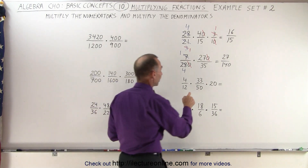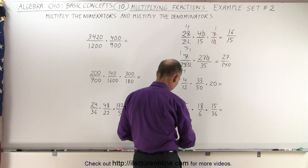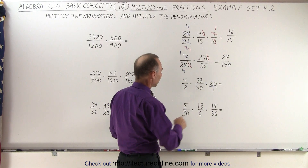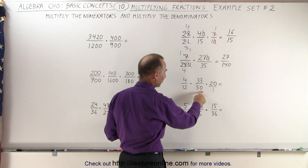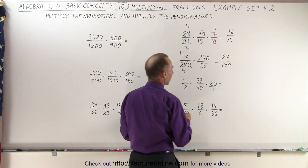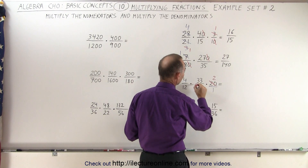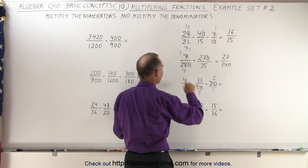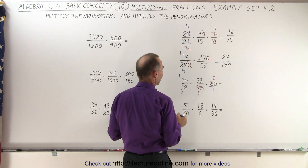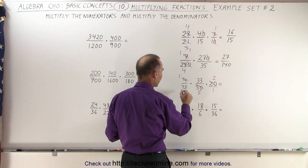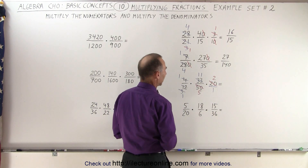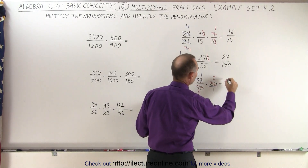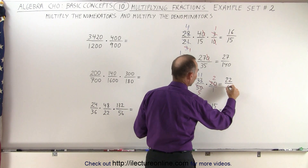Now on the third one, notice we multiply two fractions times 20. We can write 20 as 20 divided by 1, turning it into a fraction. Now we can look at all the numerators and denominators. We have a 20 and a 50 — divide both by 10, we get a 2 and a 5. We have a 4 and a 12 — both divisible by 4 — divide to get 1 and 3. We have a 33 and a 3 — both divisible by 3 — so 3 divided by 3 is 1, and 33 divided by 3 gives us 11. In the numerator we end up with 1 times 11 times 2, which is 22, divided by 1 times 5 times 1, which is 5 in the denominator.